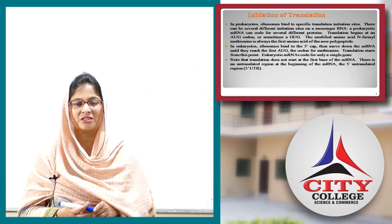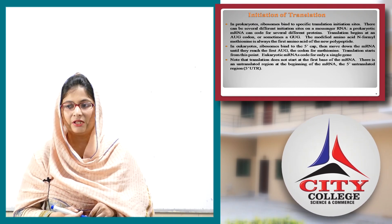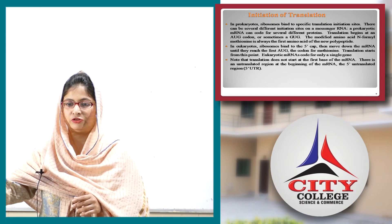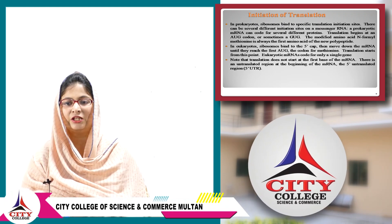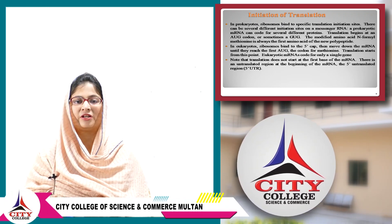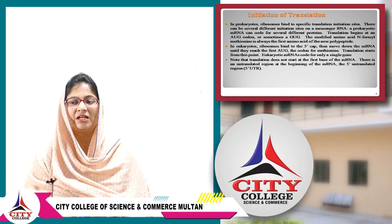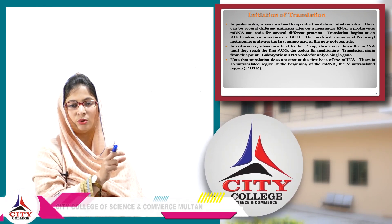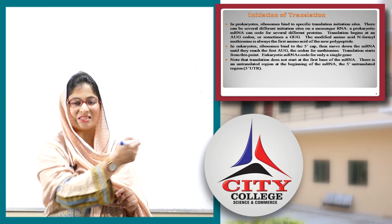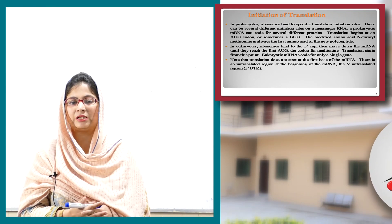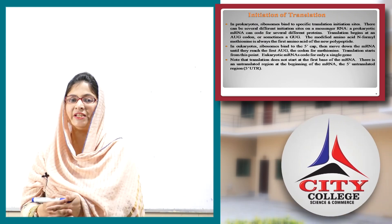Methionine is always the first amino acid of the new polypeptide. In eukaryotes, the ribosome binds the 5' cap first and then moves along the mRNA until it finds the AUG start codon, which codes for methionine. The eukaryotic mRNA codes for a single gene. The 5' untranslated region is not translated; translation begins only at the coding sequence.